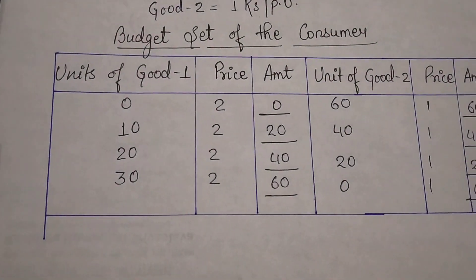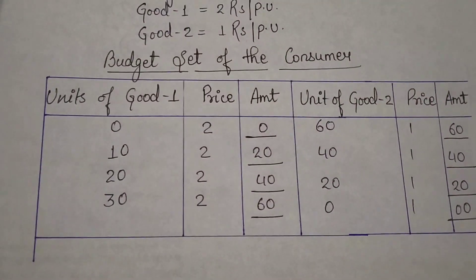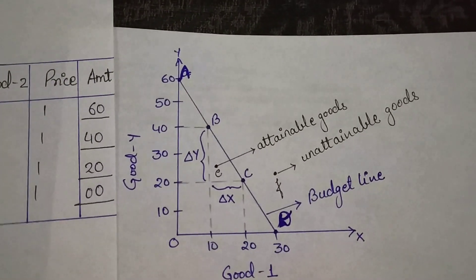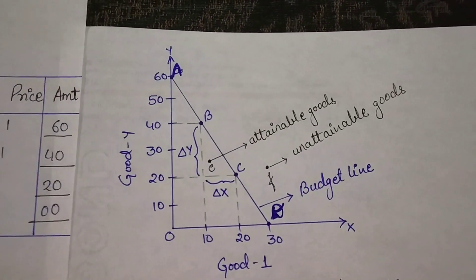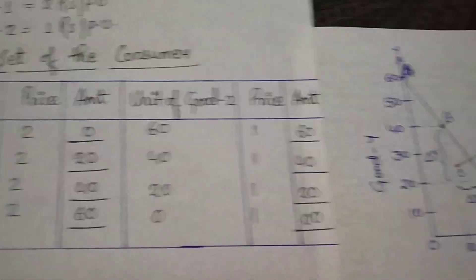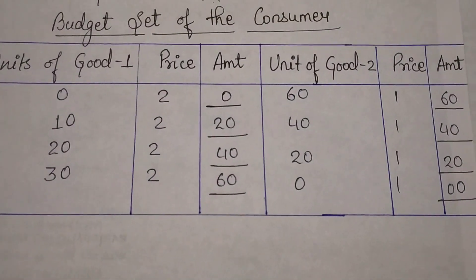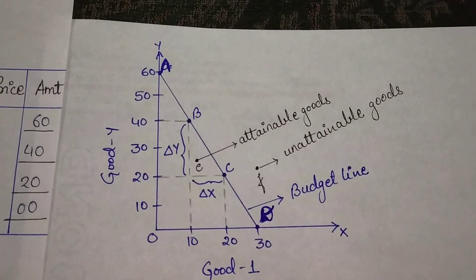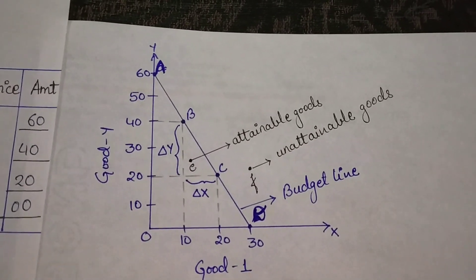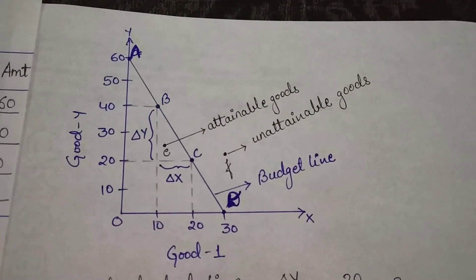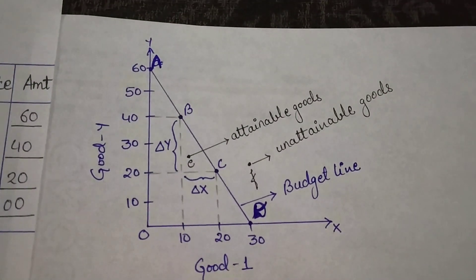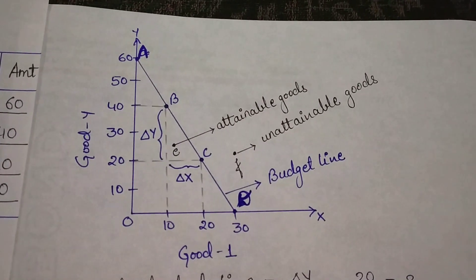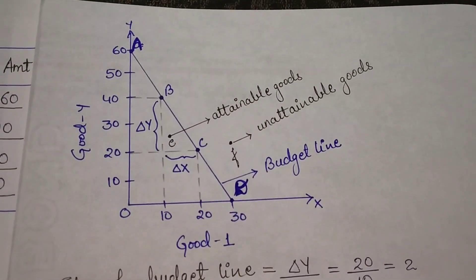When the consumption of good one was zero, consumption of good two was 60. This gives us point A on the diagram. The line drawn is the budget line, which has a negative slope - it is downward sloping.